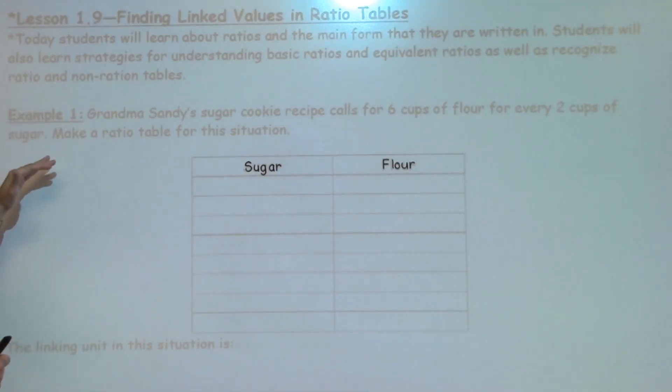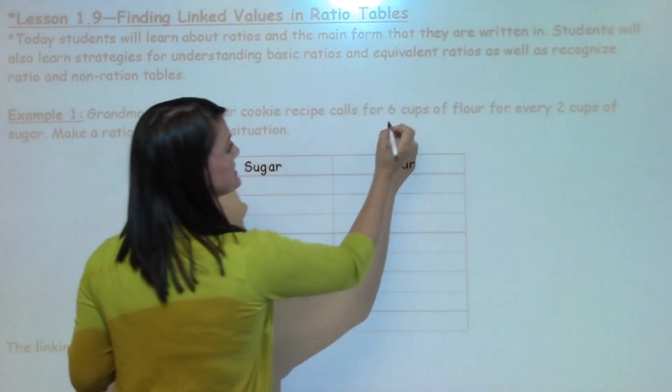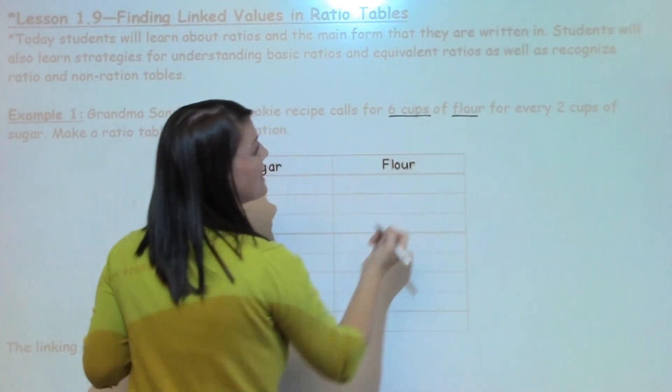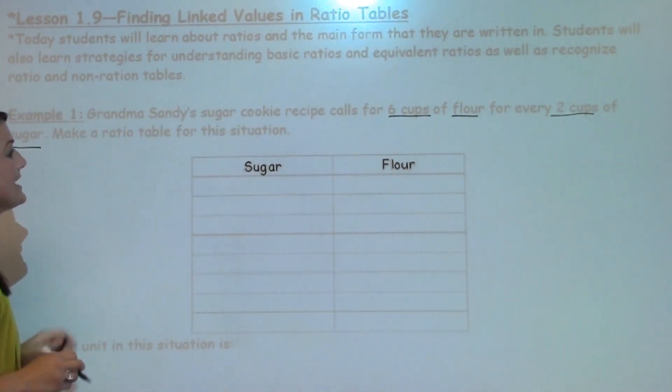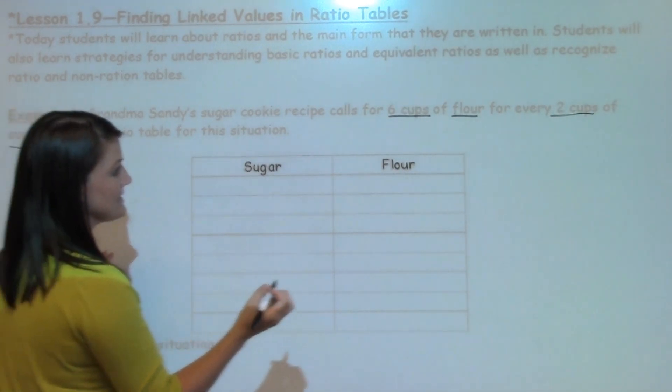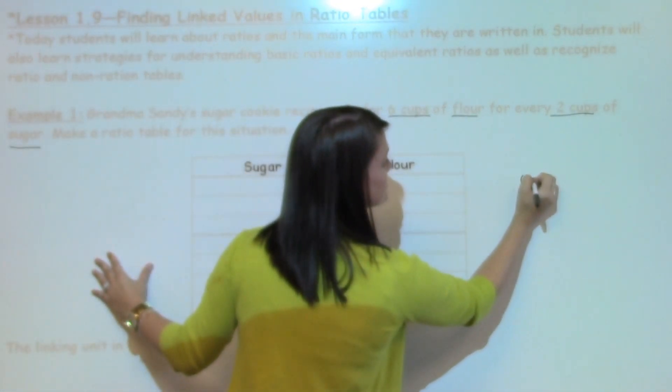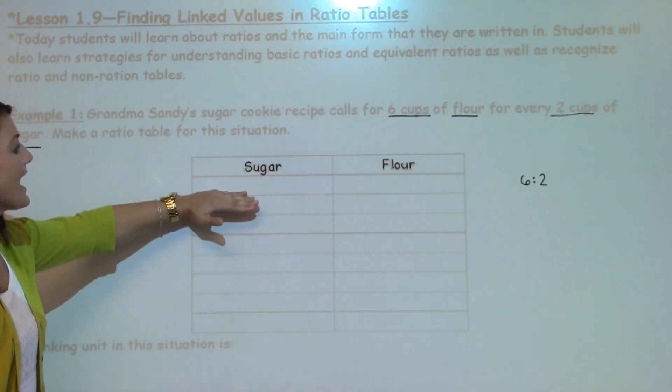We're going to look at the first example that says Grandma Sandy's sugar cookie recipe calls for 6 cups of flour for every 2 cups of sugar. It says to make a ratio table for this situation.